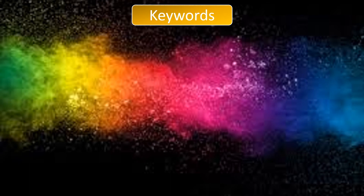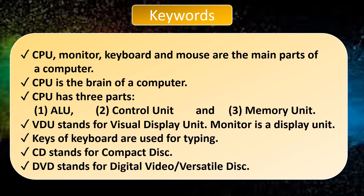So today we learned different parts of a computer. The main parts are CPU, monitor, keyboard, and mouse. CPU is the brain of a computer and has three parts: ALU, Control Unit, and Memory Unit. VDU stands for Visual Display Unit. Monitor is a display unit. Keys of the keyboard are used for typing. CD stands for Compact Disc and DVD stands for Digital Video Versatile Disc. I hope you enjoyed this video.